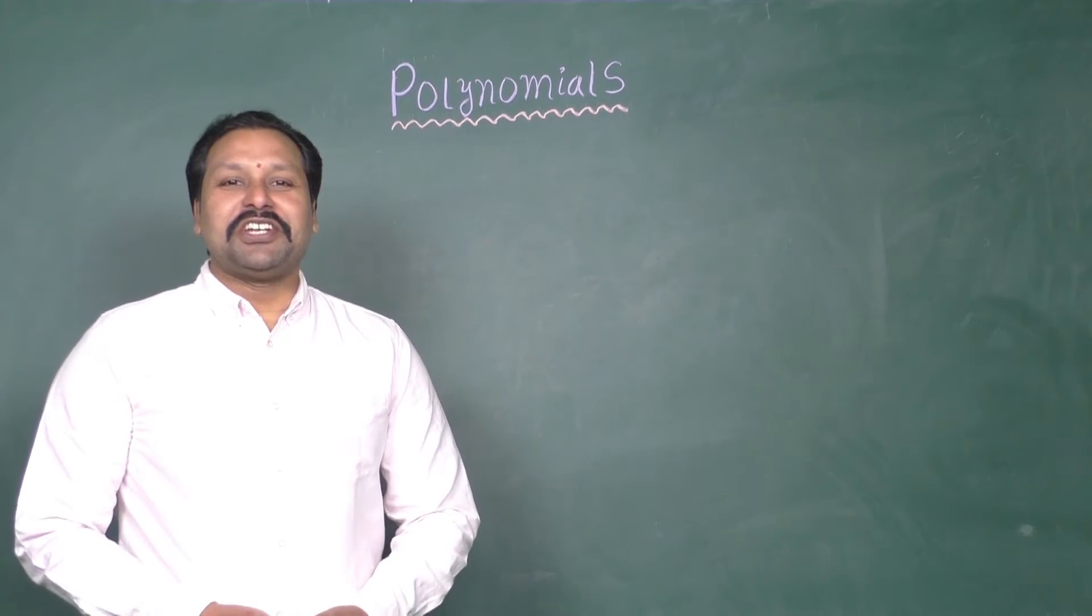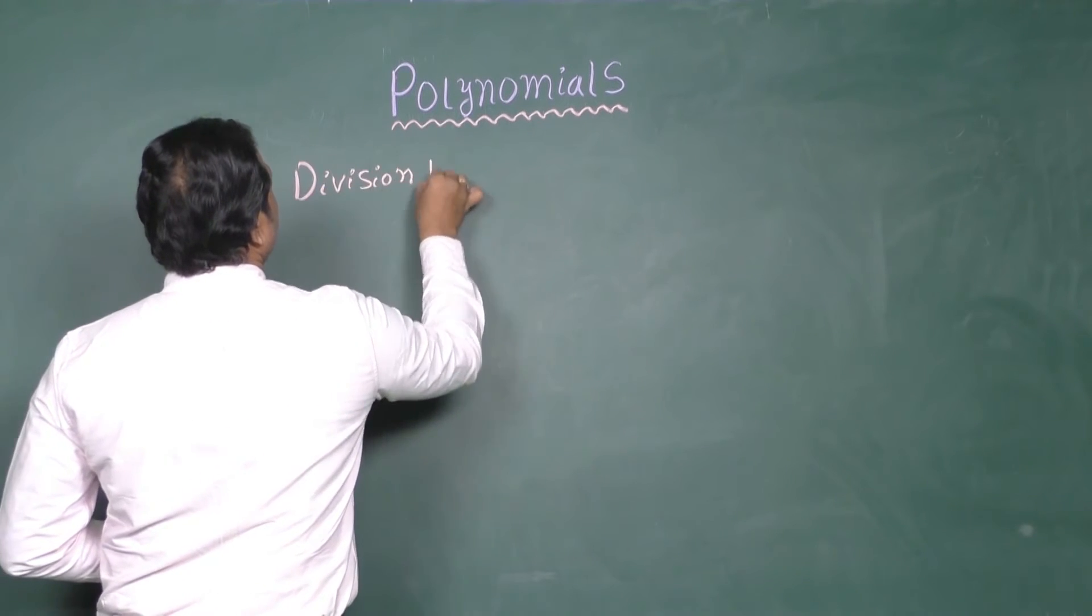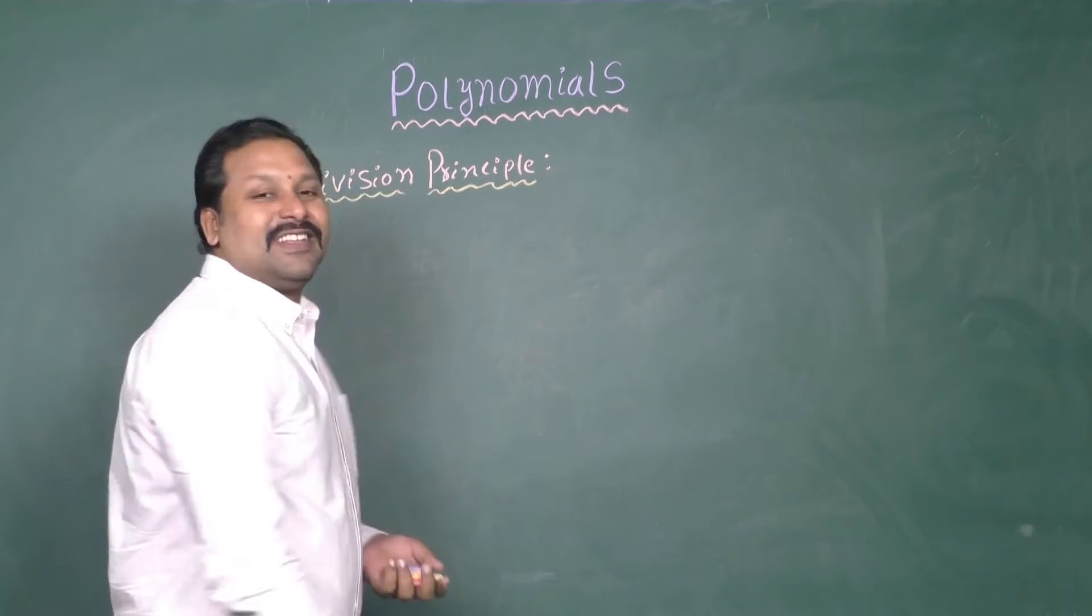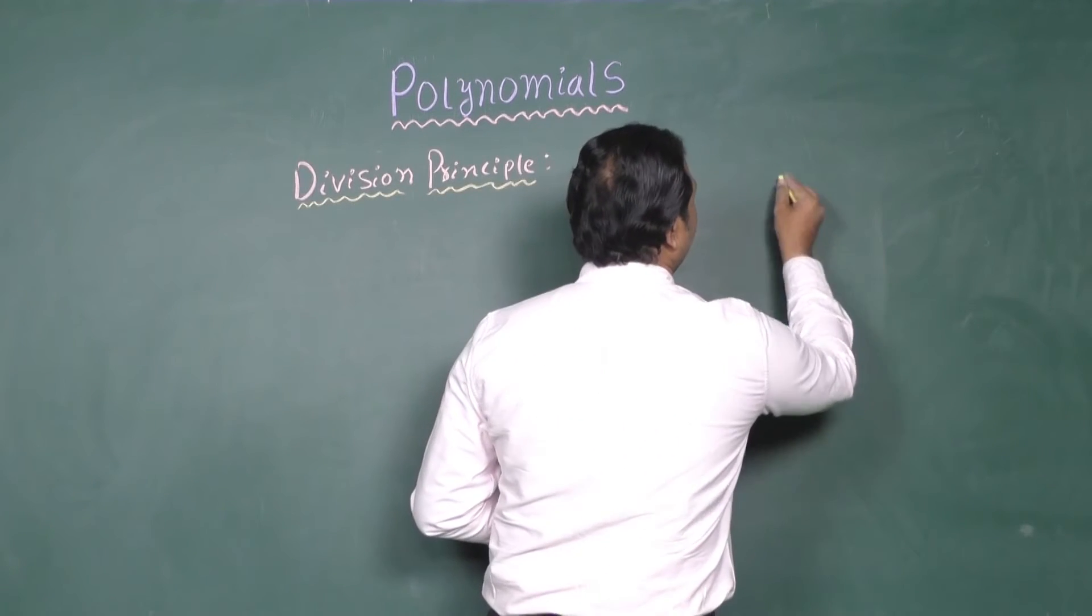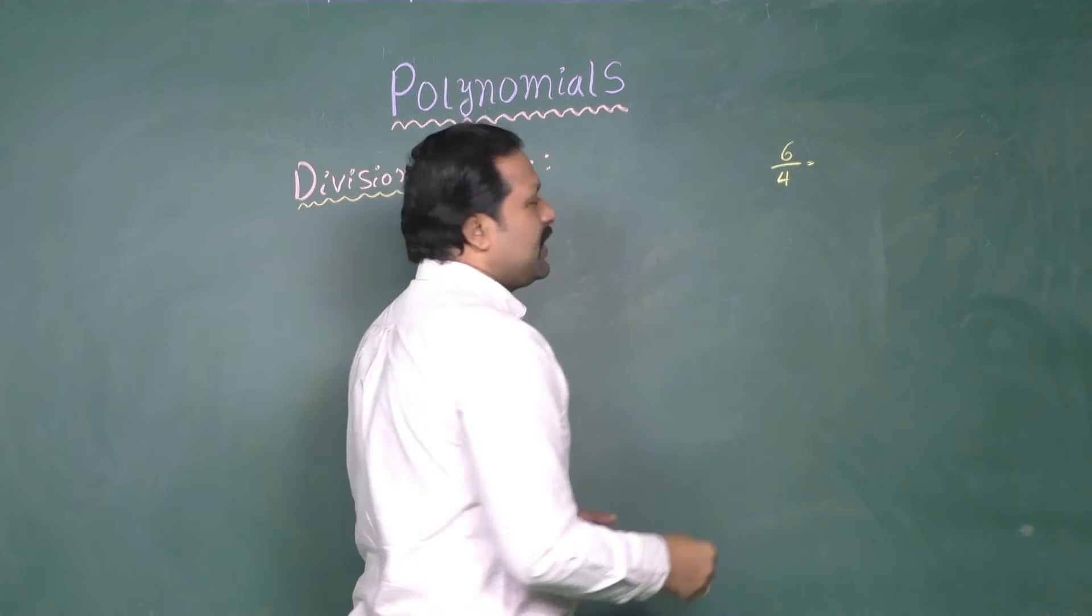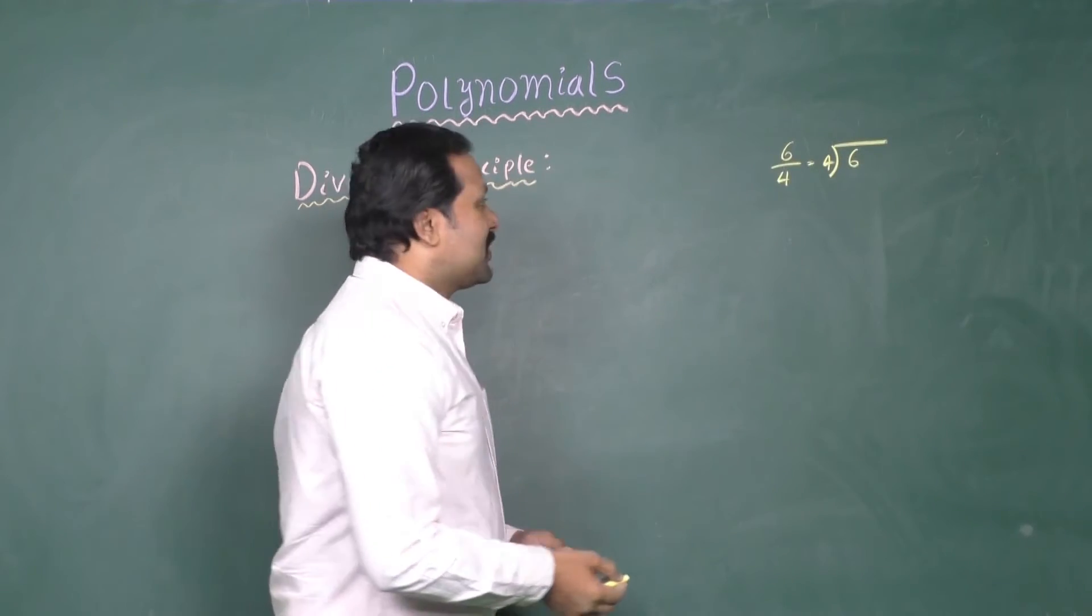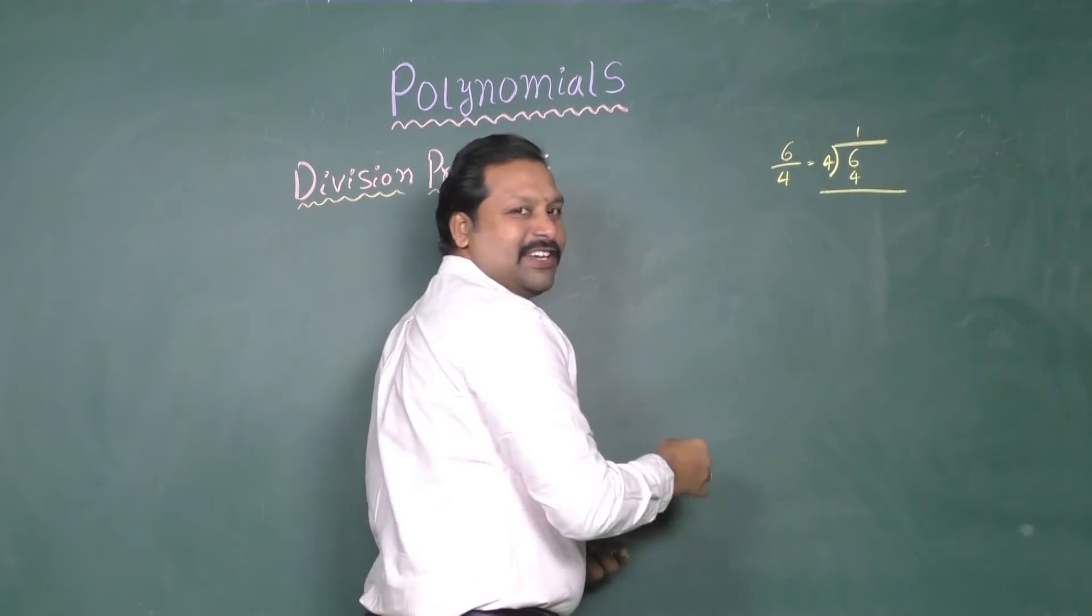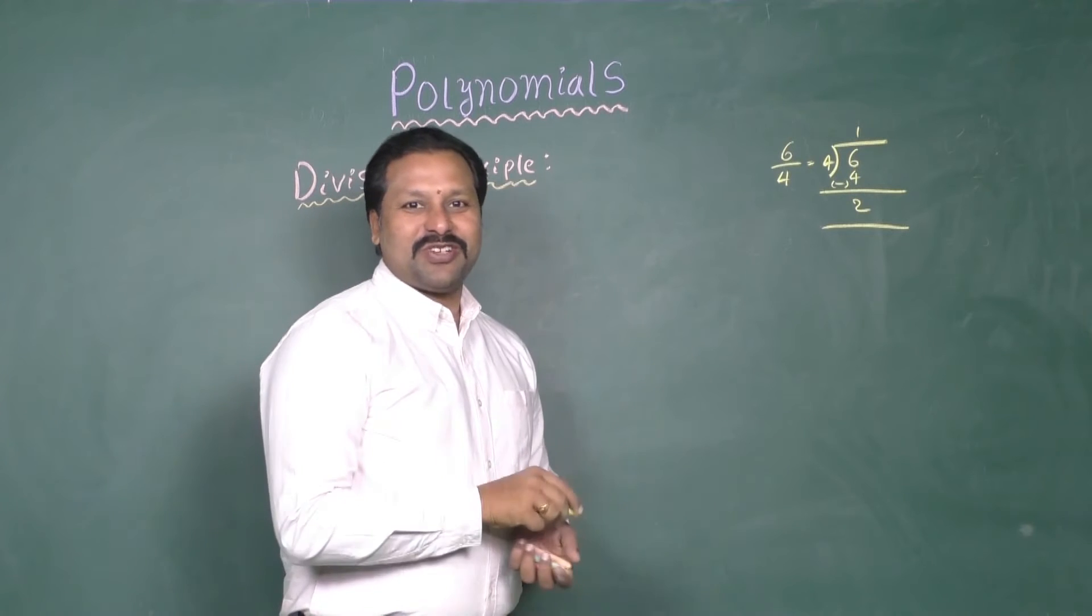Next concept, Division Principle. Let us discuss one example: 6 divided by 4. This can be written as, right, so here 4 once are 4 and take the subtraction, 6 minus 4 going to be 2. This is the actual division.